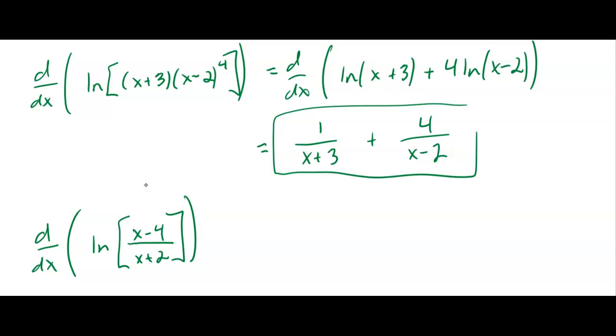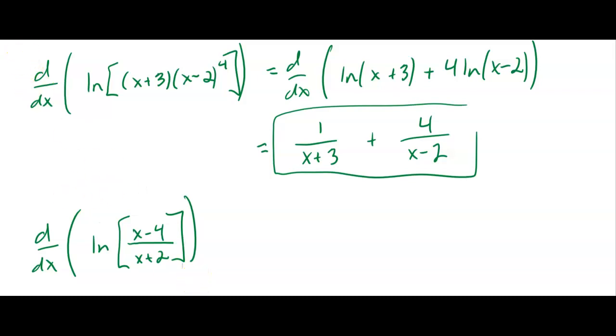Here comes your answer. All right, so that division turns to a minus. I got ln of the top minus the ln of the bottom. And then I can dir that, and we just get 1 over x minus 4 minus, from here, 1 over x plus 2.